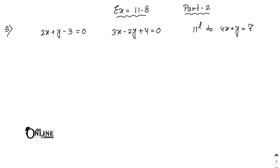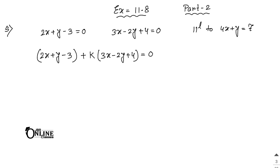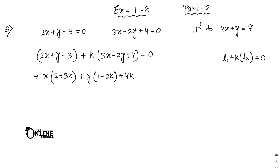So here the first two lines are intersecting each other. You can write this as 2x plus y minus 3 plus k into 3x minus 2y plus 4 equal to 0. You know the formula: L1 plus k into L2 equal to 0, if two lines intersect each other. So if x is common, it becomes 2 plus 3k; for y, it becomes 1 minus 2k; and the constant is 4k minus 3, equal to 0. Put it as equation number 1.